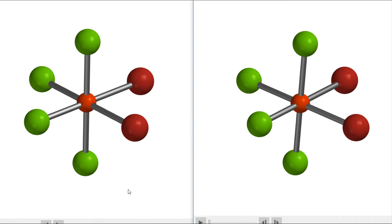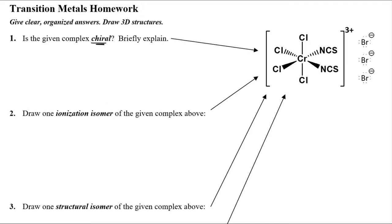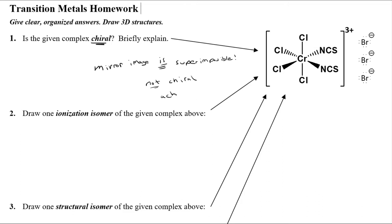I hope that clears up some confusion on chirality. If you get a model kit you can build these and prove it to yourself, or go to the Spartan lab upstairs. To summarize: the mirror image of the complex is superimposable, and if it is superimposable it is not — repeat, not — chiral. More specifically, we say that's achiral, meaning not chiral.